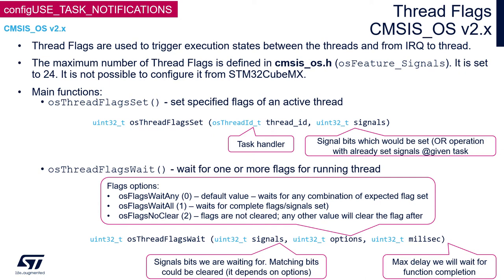We can wait for a specific mask of flags using the osThreadFlagsWait function. This function needs three arguments: the first is the mask of flags we are waiting for, then the options, and the third is the maximum delay. The task will wait – it will be in the blocked state – waiting for a specific mask of flags. This function is always called by the task checking its own thread flags field within its own task control block, so this function must not be called from an interrupt procedure.